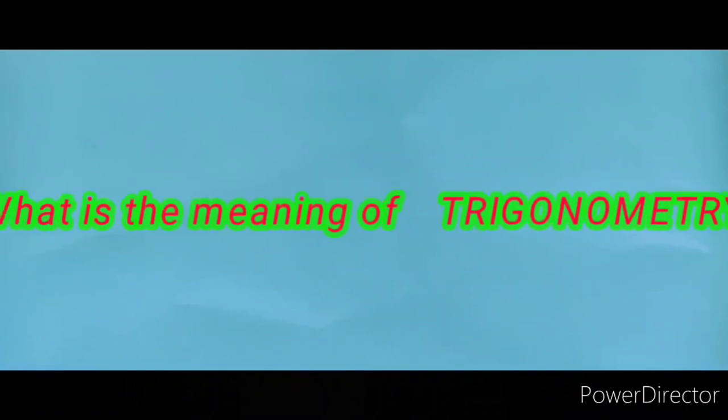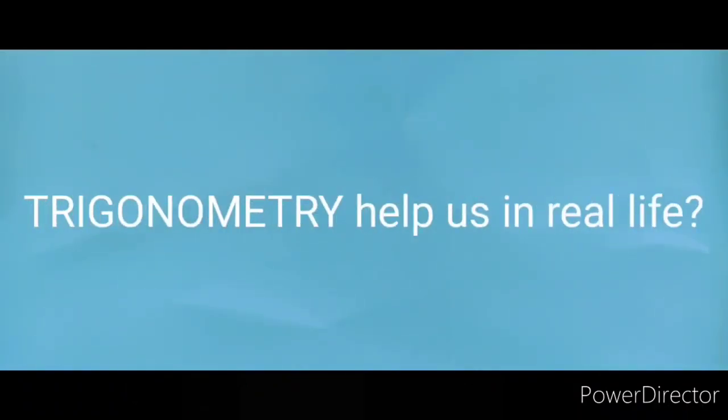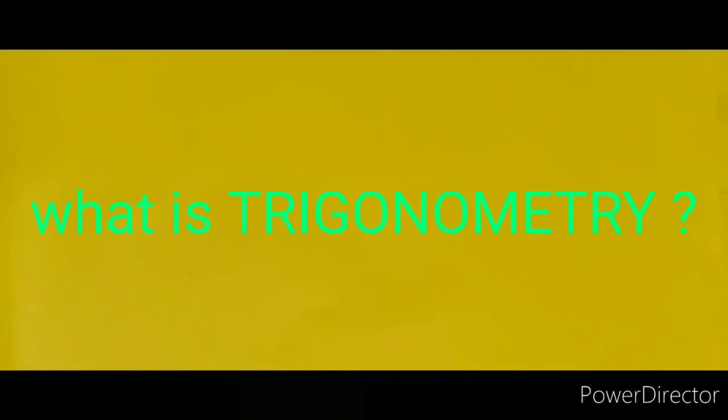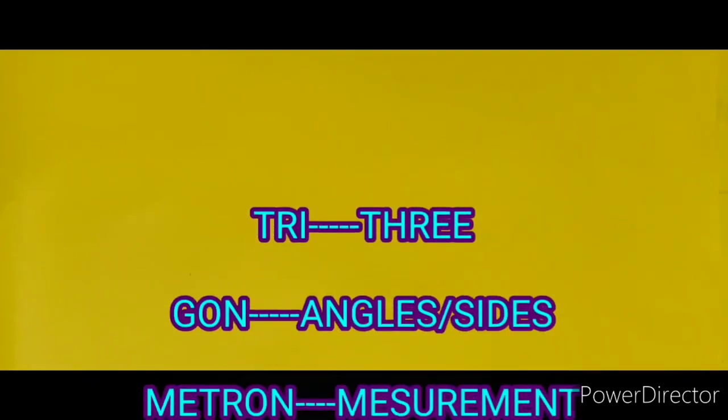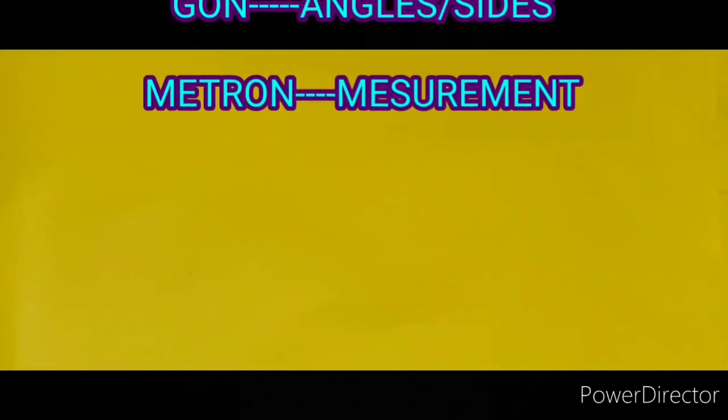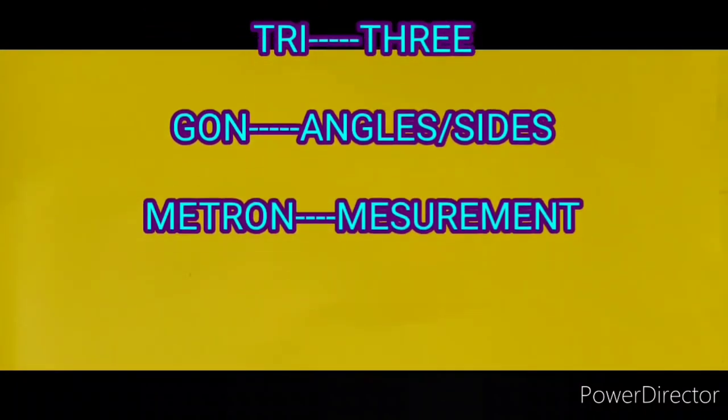First, we need to understand the meaning of trigonometry. The word trigonometry can be broken into three words: tri, gone, and metron. Tri means three, gone means angles or sides, and metron means measurement. Briefly, the concept of trigonometry is three sides measurement.